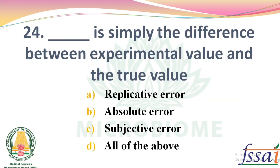Dash is simply the difference between the experimental value and the true value. Options: Replicative Error, Absolute Error, Subjective Error, all of the above. The right answer: Option B, Absolute Error.